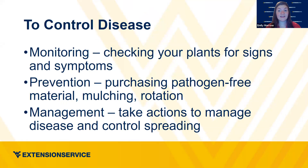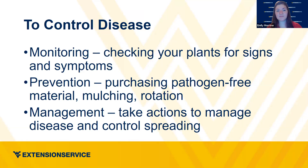To control diseases, you want to monitor ideally daily. Checking your plants for signs and symptoms. If you can get pathogen-free material — healthy transplants or disease-certified disease-free seed — that helps. Prevent by doing crop rotation — crop rotation, crop rotation. Mulching helps a lot too; some diseases are present in the soil and rain splashes soil onto leaves, transmitting it to the plant. Take action to manage the disease when you see it, control it from spreading, and prevent it where possible. Sometimes that means chemical control, but other times the plant just needs to be removed.